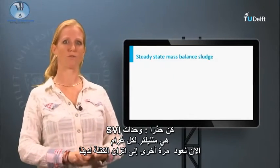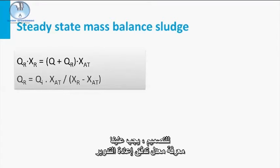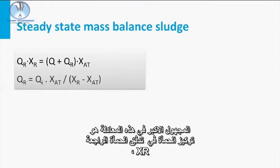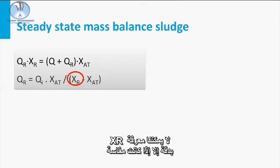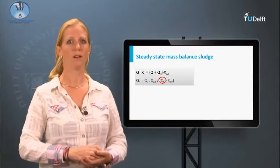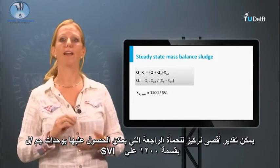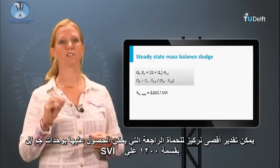Now back to our mass balance of the aeration tank. For the design, we should know the recycle flow rate. The big unknown to solve this equation is the sludge concentration of the recycle flow, Xr. We cannot know the precise Xr unless we would measure it. Often returned sludge concentrations from secondary clarifiers are between 4 and 12 grams per liter. We could estimate a maximum obtainable sludge concentration in grams per liter by dividing 1200 by the SVI.